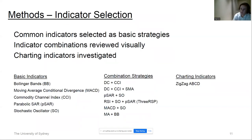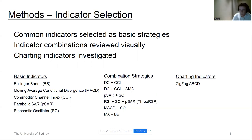Moving on to indicator selection, common indicators well-seen in financial literature were selected as basic strategies: Bollinger Bands, Parabolic SAR, Stochastic Oscillators, and others. The process then involved finding more complicated strategies by reviewing these visually on charts and seeing if they led to any visual or obvious breakouts. Some indicators provide an ambiguous or subjective view of patterns and were found tricky to implement explicitly in a coding framework, as their parameters can be quite local with no global settings for how many bars to look at — only one of these was successfully implemented.